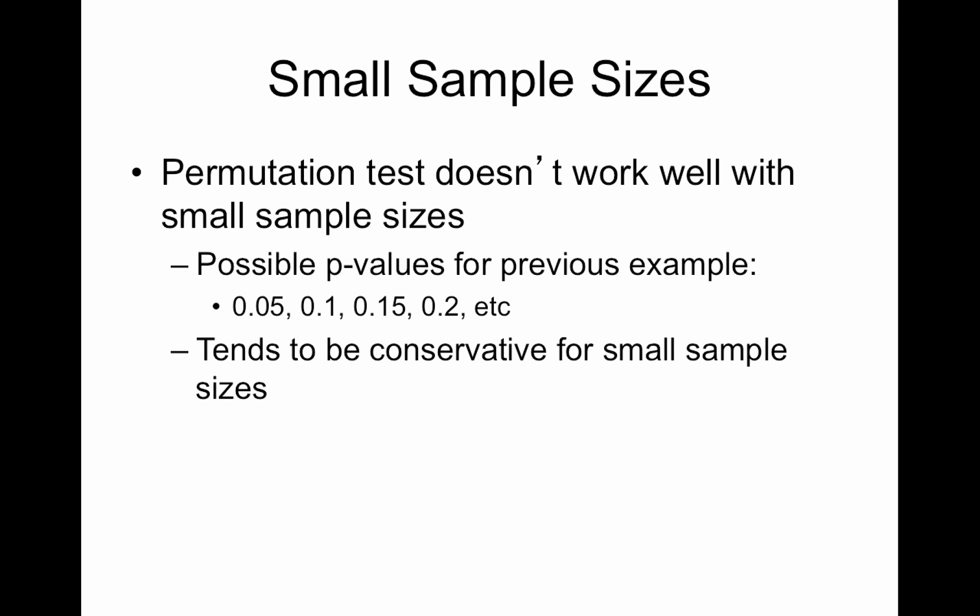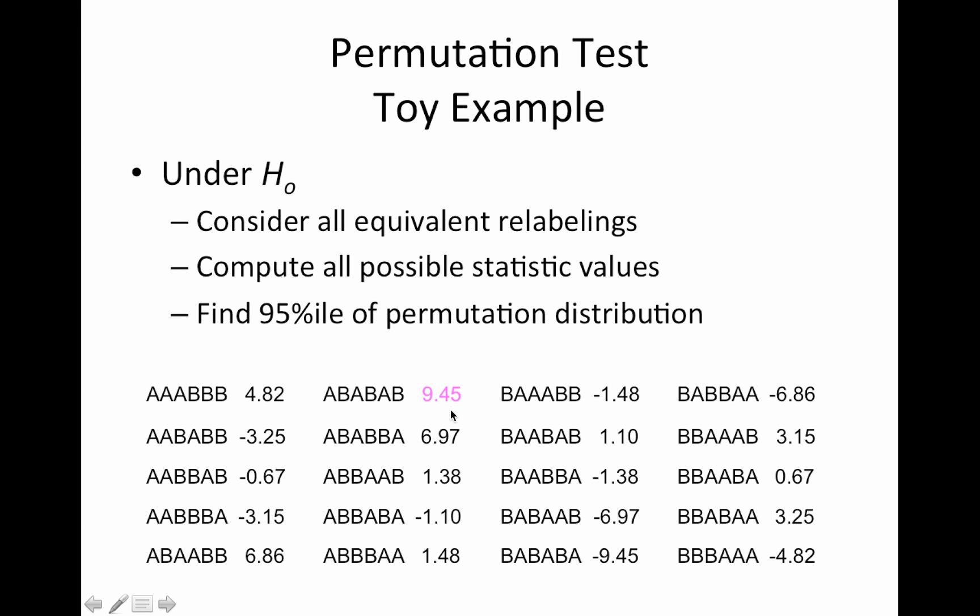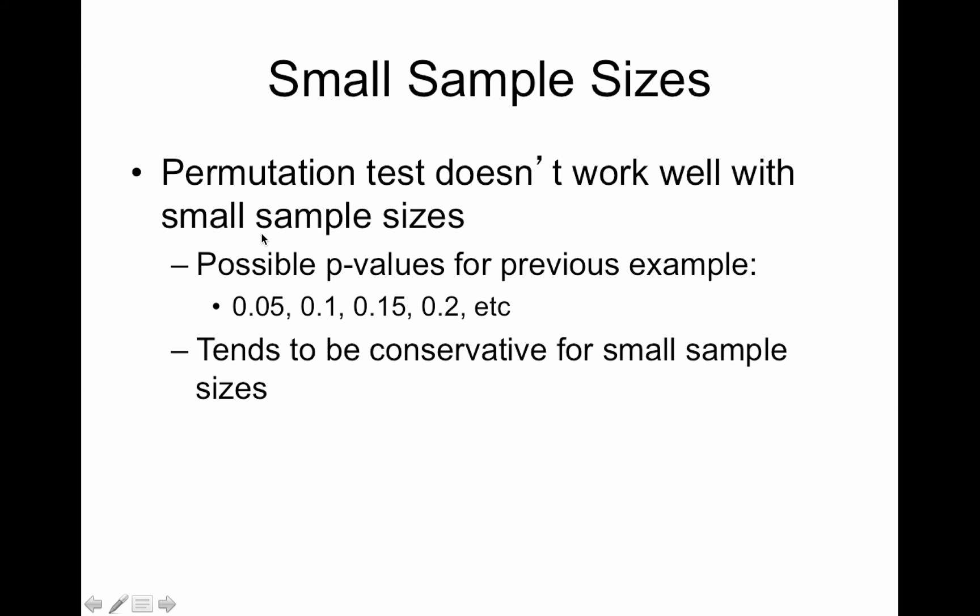So one restriction with permutation tests is that they don't work well with small sample size because you can't get enough shuffles in. So in this previous example the smallest p-value I can have is 1 out of 20, right? And actually the only possible p-values are going to be multiples of 0.05. So 0.05, 0.1, 0.15, 0.2. So it tends to be conservative for small sample sizes because you don't have enough. Actually if you have fewer than 20 you can't even get a p-value as small as 0.05.